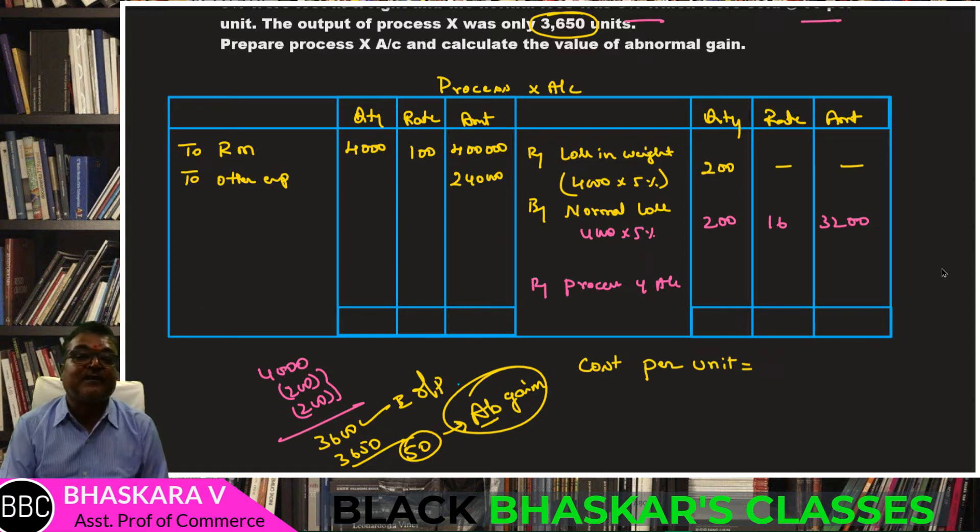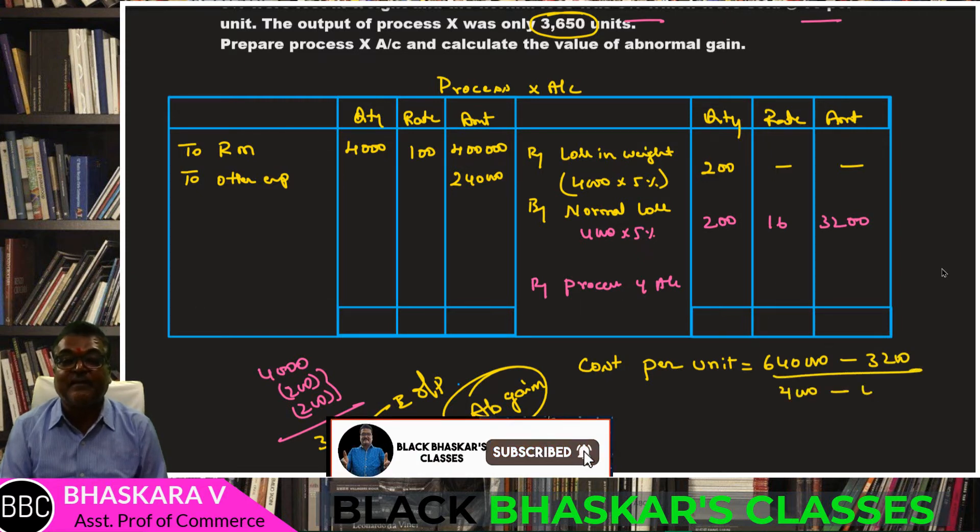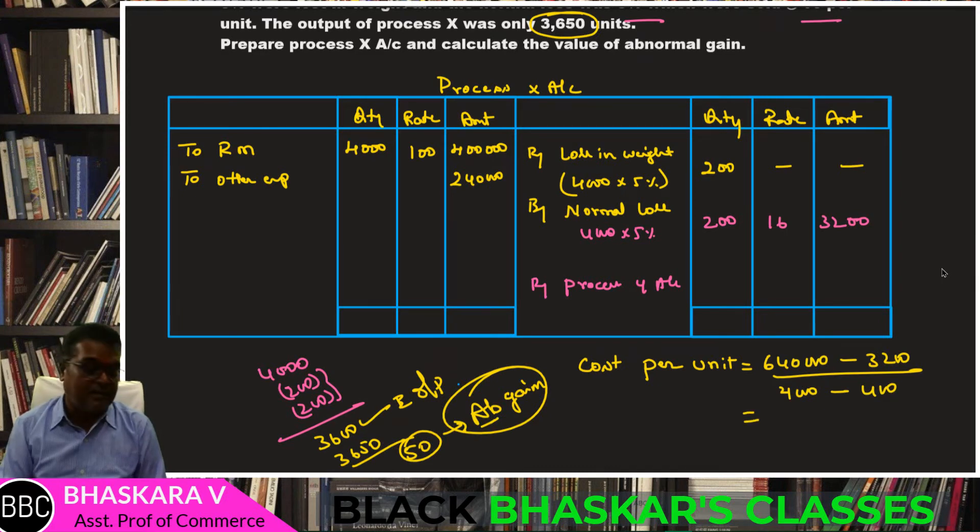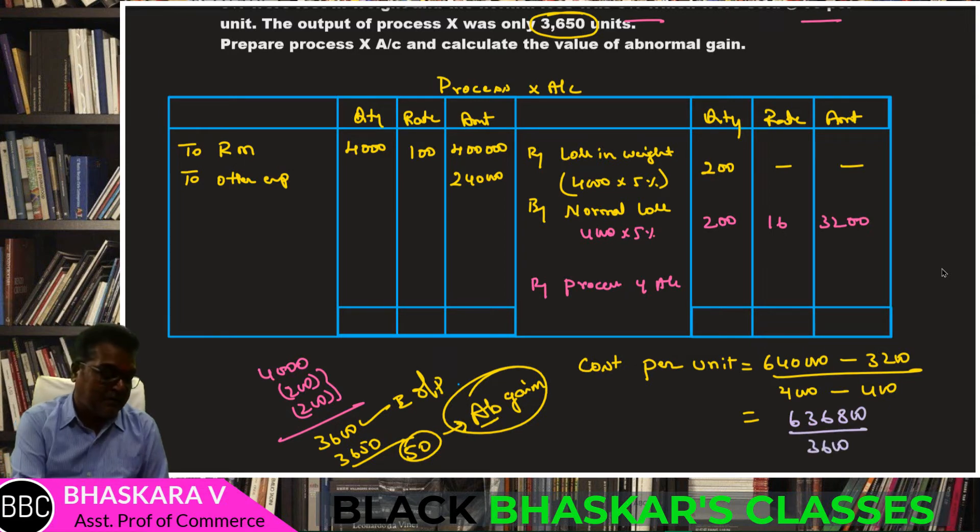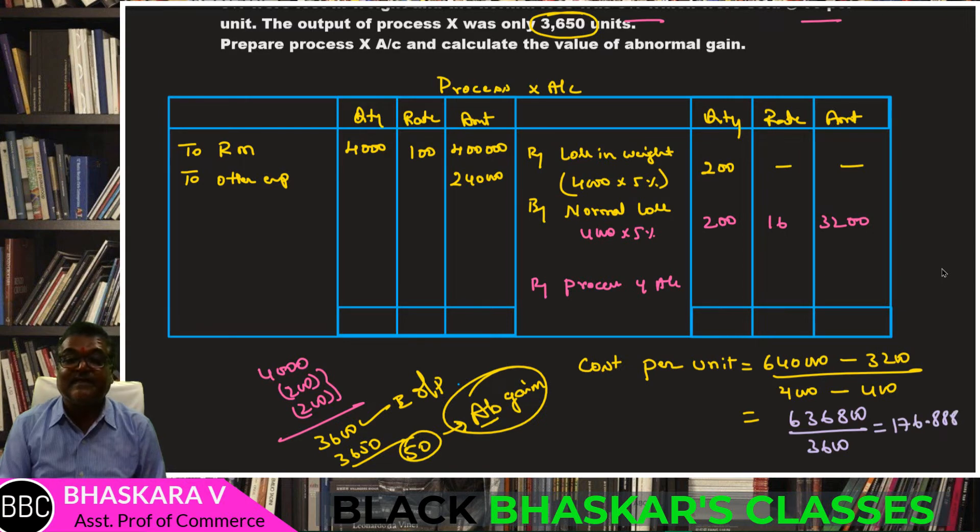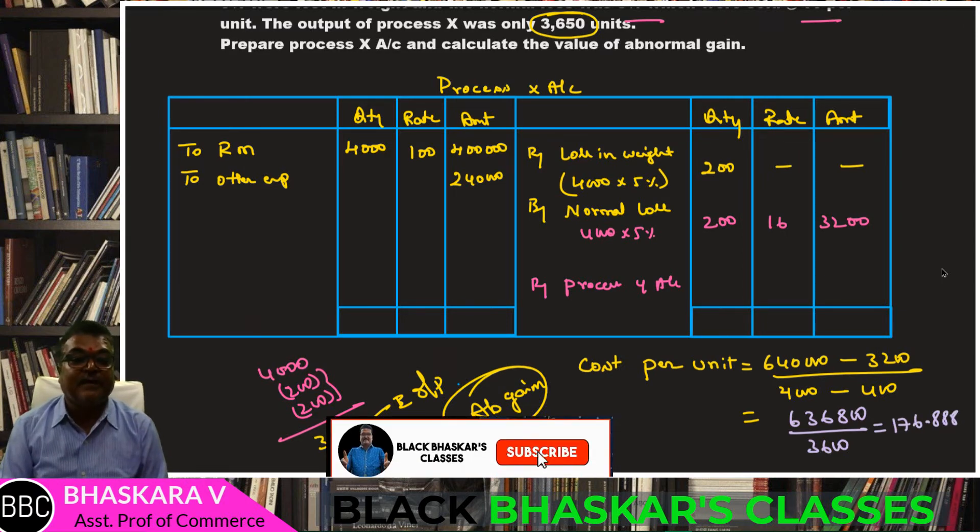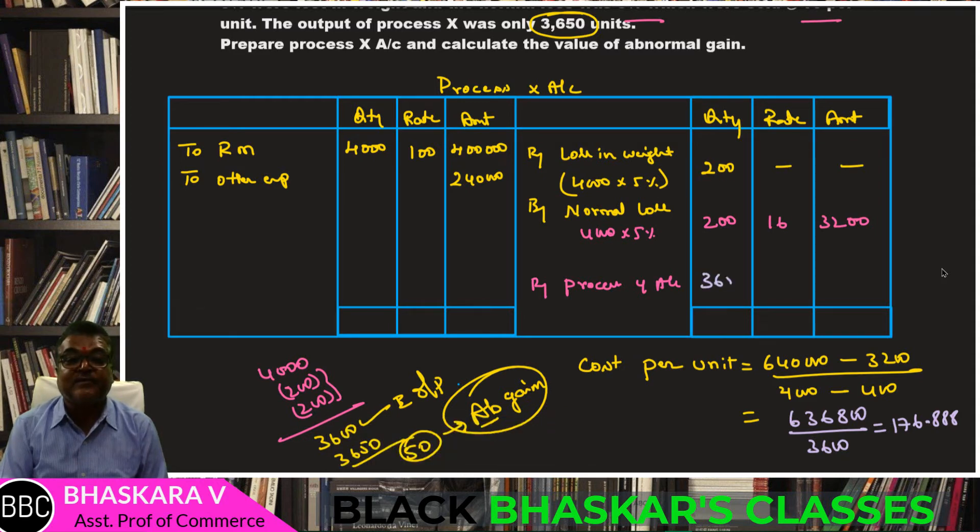Now let's calculate cost per unit. Debit side total minus credit side total: 4 lakh plus 2.4 lakh equals 6.4 lakh, minus 3,200 equals 6,36,800. Divided by debit side total 4,000 minus 400 equals 3,600. So 6,36,800 divided by 3,600 equals 176.888 recurring per unit.